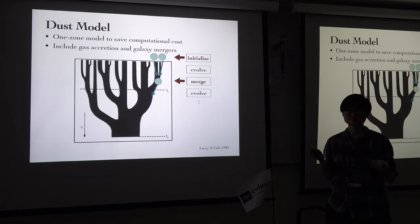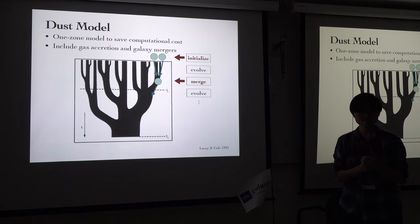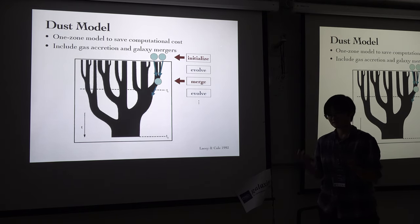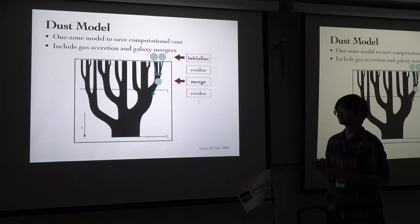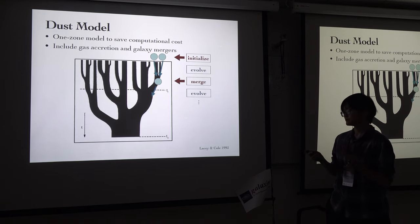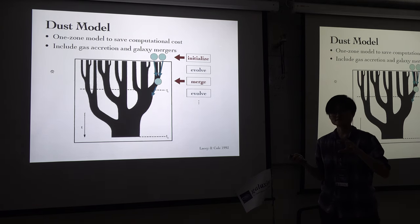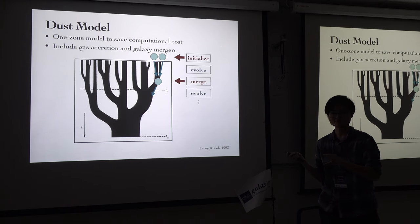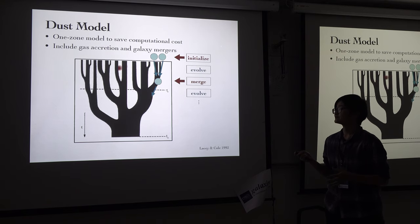What is the specialty of our model? We take galaxy information — interstellar medium properties, gas mass, stellar mass, metallicity — all from the IllustrisTNG simulation. We build a random model for each galaxy and set 64 dust size bins for each galaxy, then evolve these galaxies along the merger tree.